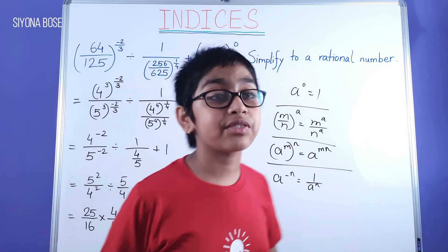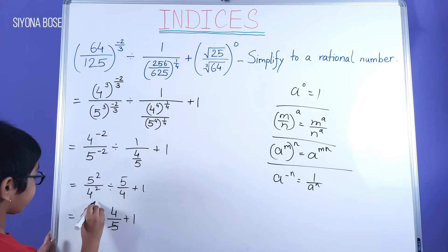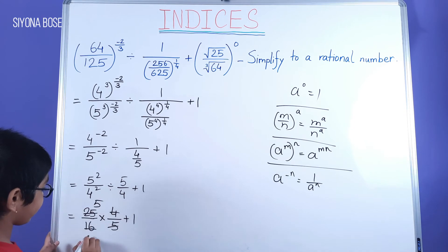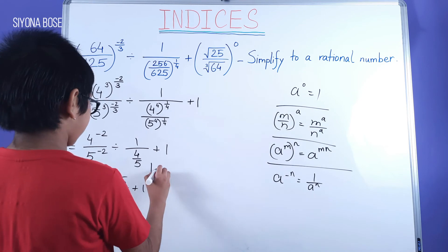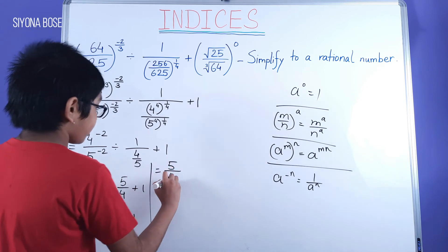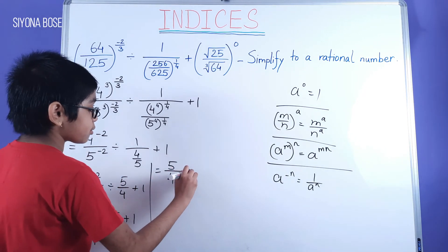Then 25 by 16 into 4 by 5 plus 1. Now we cancel out 25 and 5. Here we get 5, and here we get 4.